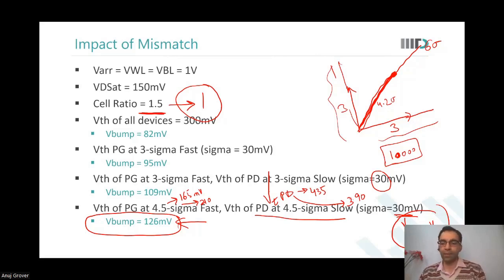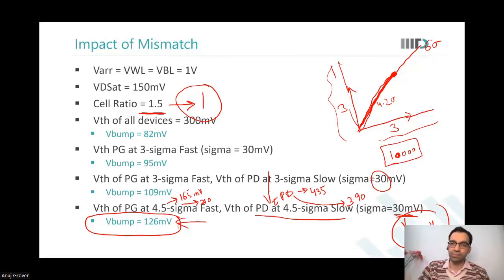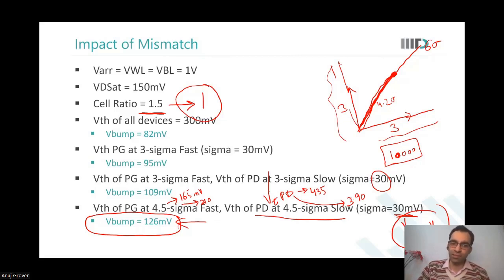Even at IDMs, this is usually done by process/technology teams themselves — a designer would not get to choose a cell ratio of 1 until the technology team is convinced they can manage it. But with mismatch considered, the V bump for cell ratio 1.5 ends up similar to cell ratio 1. If you apply mismatch to cell ratio 1 also, there is some loss of bump there as well.